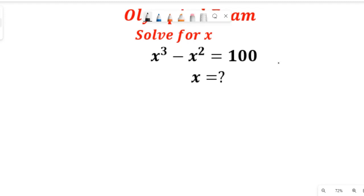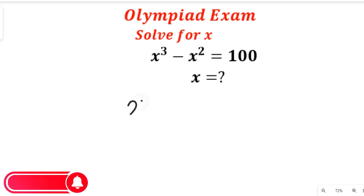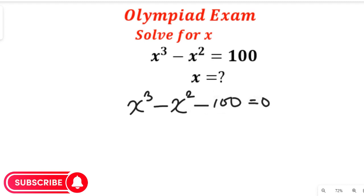As we solve this question, you are going to see how we apply some algebraic formulas to get our solution right. We are going to simplify this equation: x to the power of 3 minus x to the power of 2 equal to zero, because 100 comes to the other side and the negative becomes positive.